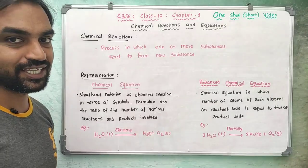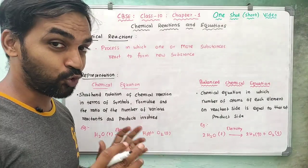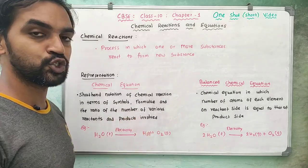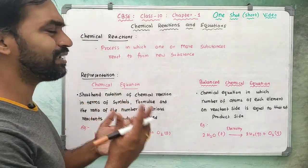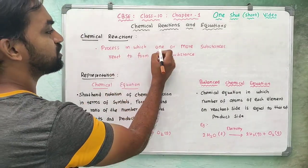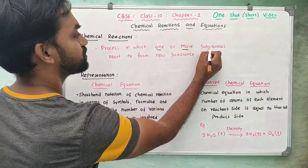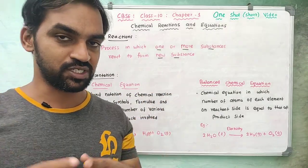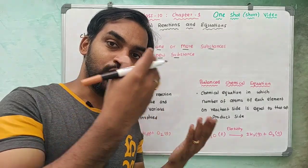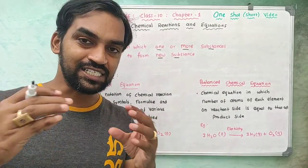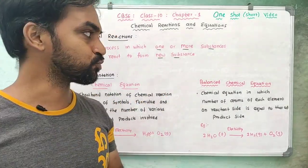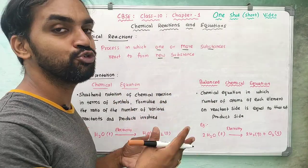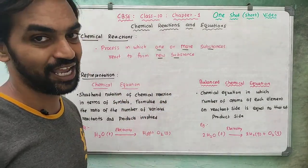Chemical Reactions — what is the 10th standard? We will cover them. Even 11th, 12th, we will learn the basics in this video. Chemical Reactions: what is the process in which one or more substances react to form a new substance? So, 2-3 substances combined produce a new substance. That is chemical reactions.